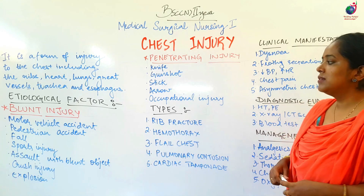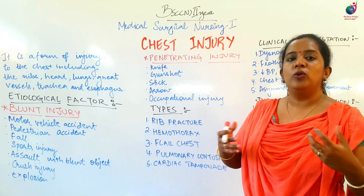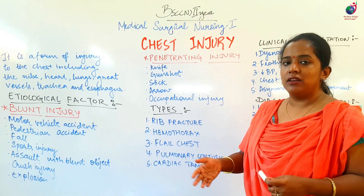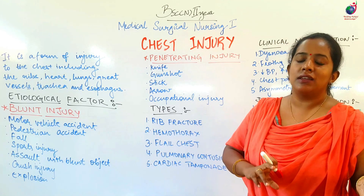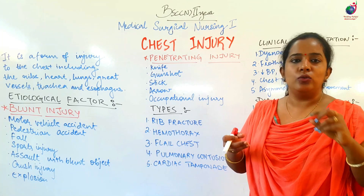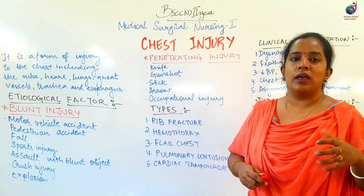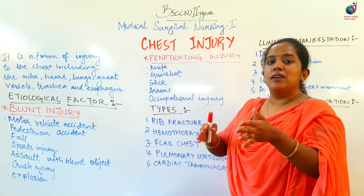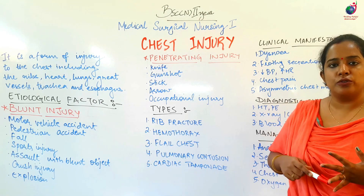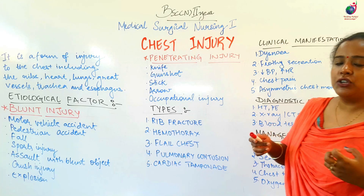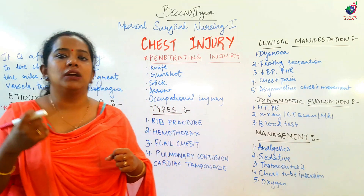Blunt injuries mein aate hain motor vehicle accidents, pedestrian accidents, crush injuries, ya kahin par explosion hua ho toh explosion ki force ki wajah se ya acceleration ke saath gire ho — woh sab blunt injuries mein aata hai. Penetrating injuries mein aate hain knife, gunshots, sticks, arrows, ya koi bhi occupational area mein kisi particular machine ke through jo chest cavity ko baahir se penetrate karke under gayi ho.